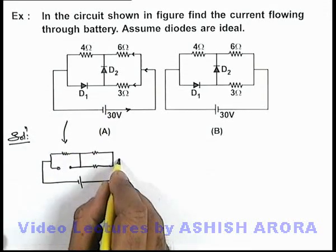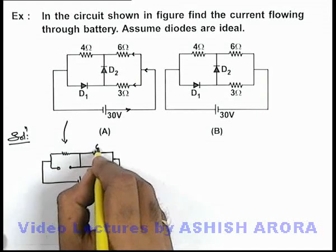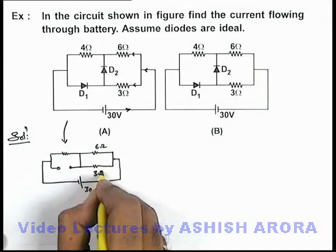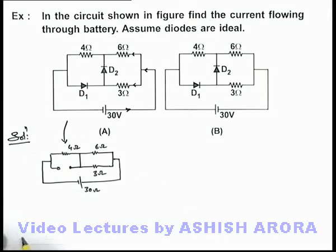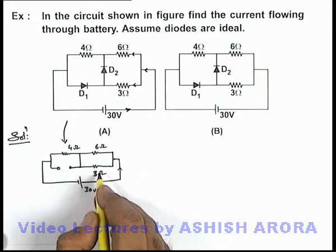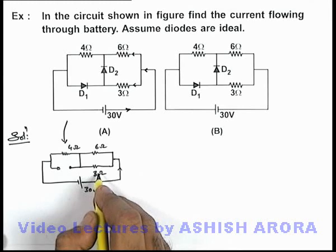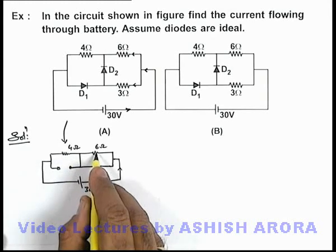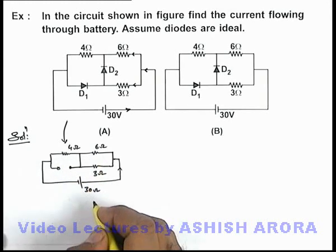And there is a battery of 30 volt connected across it, these resistances of 6 ohm, 3 ohm and 4 ohm respectively. Now if the current is passing through it, these two resistances will behave in parallel, and 4 ohm will act as it is connected in series with these two in parallel.